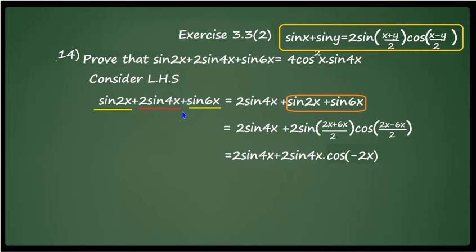We use the even-function identity cos(−2x) = cos 2x. So the expression becomes 2 sin 4x + 2 sin 4x · cos 2x. We can now factor out 2 sin 4x to get 2 sin 4x · (1 + cos 2x).